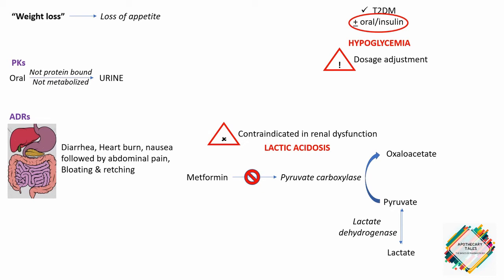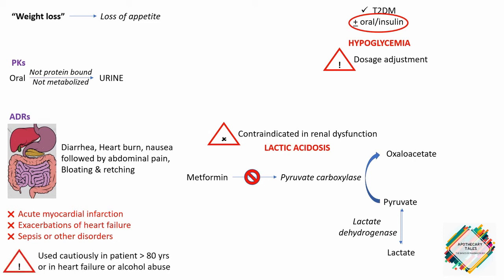It is very important that metformin is not used in patients with acute myocardial infarction, exacerbations of heart failure, sepsis, or other disorders that could lead to renal dysfunction. Metformin is used cautiously in patients greater than 80 years, in heart failure, or in alcohol abuse. The reason for caution in alcohol abuse is that ethanol consumption and metabolism causes high levels of NADH in the cytosol and mitochondria of the liver cell, which activates lactate dehydrogenase and causes synthesis of lactate from pyruvate.